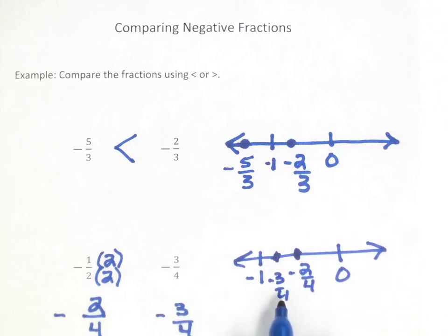Therefore we see that negative two-fourths is to the right of negative three-fourths on the number line, so negative two-fourths, or as we had, negative one-half is greater than negative three-fourths.